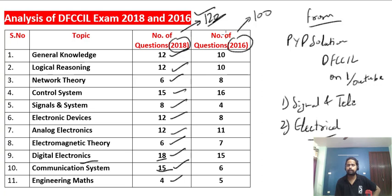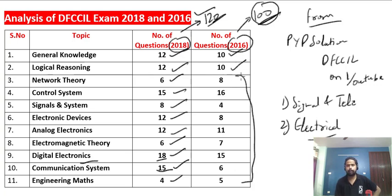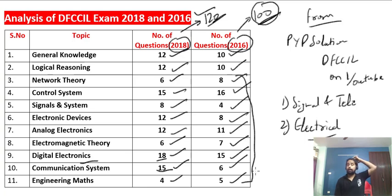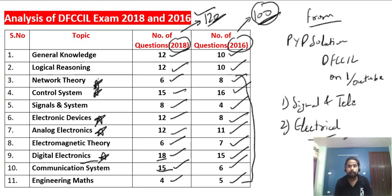For the DFCCIL 2016 exam, total questions were 100: 10 from General Knowledge and Logical Reasoning, and 80 technical questions. Breakdown: Network Theory 8 questions, Control System 16 questions, Signal System 4 questions, Electronic Devices 8 questions, Analog Electronics 11 questions, EMT 7 questions, Digital Electronics 15 questions, Communication System 6 questions, and Engineering Maths 5 questions. Major weightage was given to Control System, Digital Electronics, Electronic Devices, Analog Electronics, and Network Theory — these five subjects cover 60 to 70 percent of the syllabus.